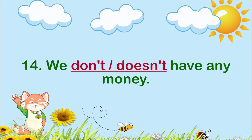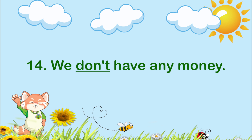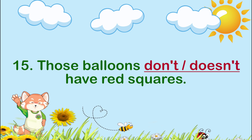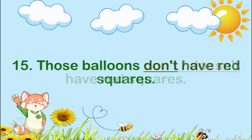Number fourteen: We ___ any money. The answer is don't have. We don't have any money. And the final question, number fifteen: Those balloons ___ red squares? The answer is don't have. Those balloons don't have red squares.